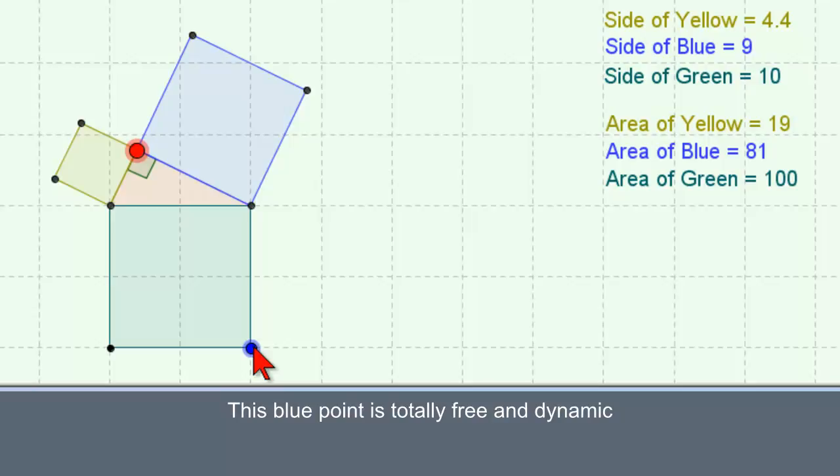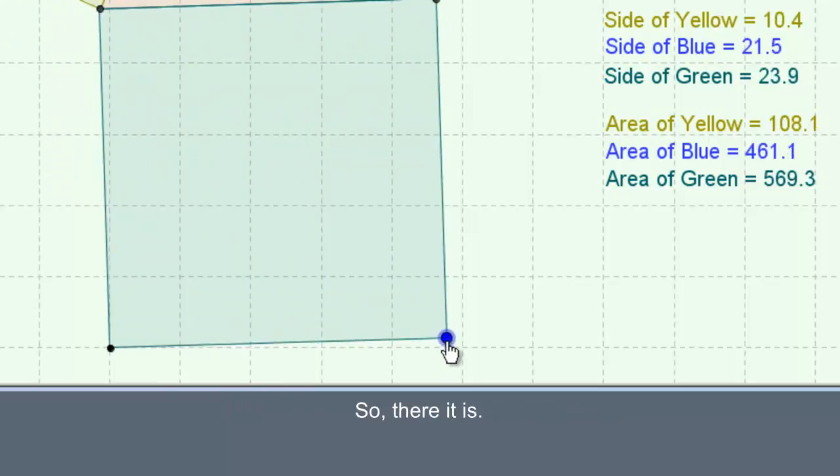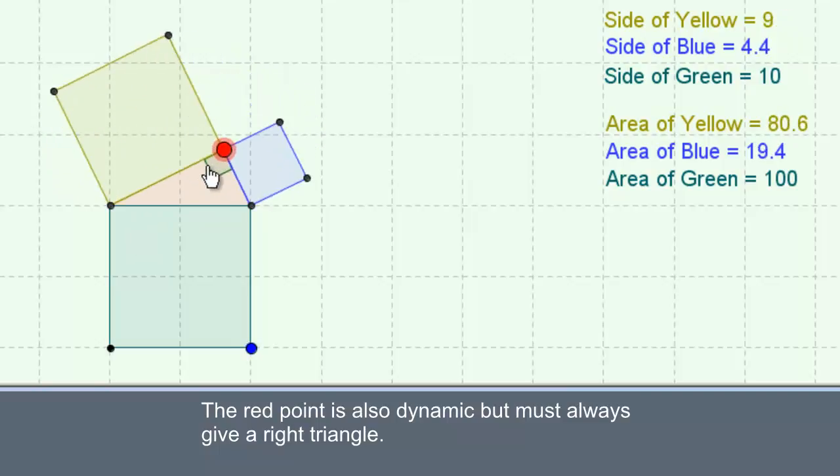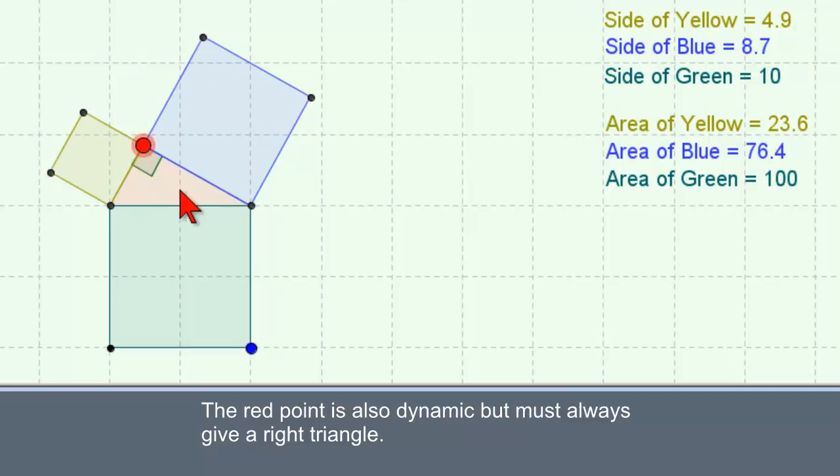This blue point is totally free and dynamic, so there it is. The red point is also dynamic but must always give a right triangle.